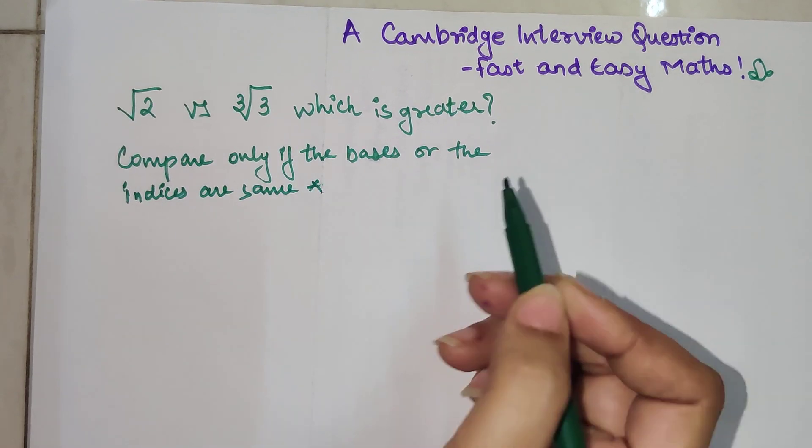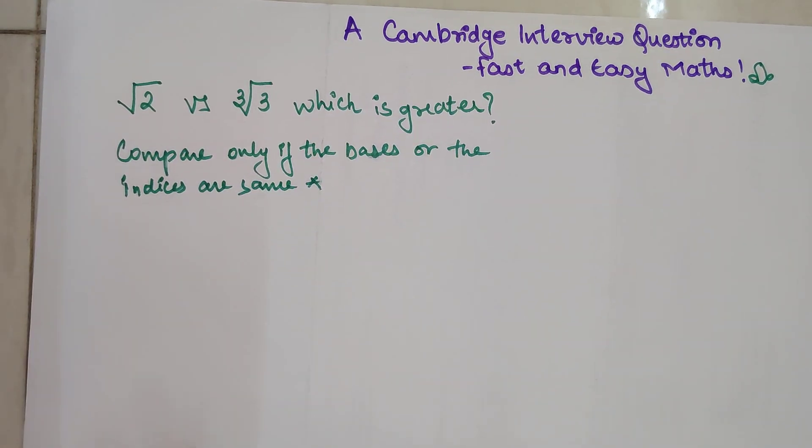This is the golden rule of comparison. You can compare any number with an exponent to another number only if the bases are same or the exponents are same.